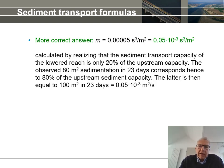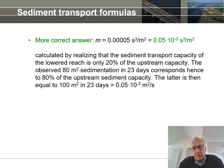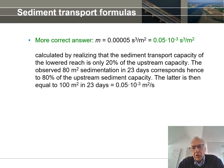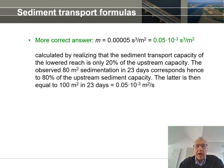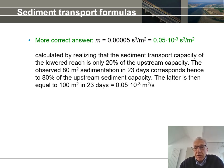A more correct answer is m = 0.05 × 10⁻³ s³/m². We derive this by looking at the part that really matters for morphology, using observed morphological changes. When we realize that the sediment transport capacity of the lowered reach is only 20% of the upstream capacity, the observed 80 m² of sedimentation in 23 days corresponds to 80% of the upstream sediment capacity. That means the upstream sediment transport capacity equals 100 m² in 23 days, which comes down to 0.05 × 10⁻³ m²/s.